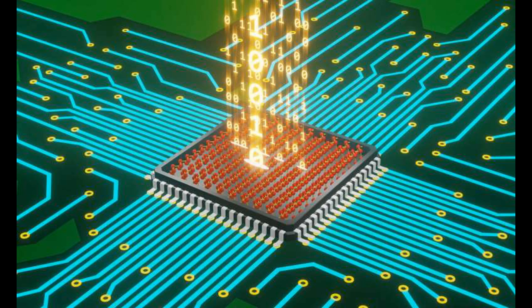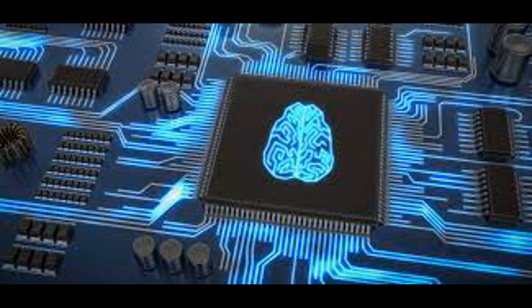Overall, bus arbitration and communication functions enable efficient and reliable data exchange between components within electronic devices. Chipsets play a crucial role in managing bus access, controlling data transfer, and ensuring compatibility between different bus protocols, contributing to the overall performance and functionality of electronic systems. Interrupt handling is a crucial function of chipsets, enabling the CPU to respond promptly to external events or signals that require immediate attention.